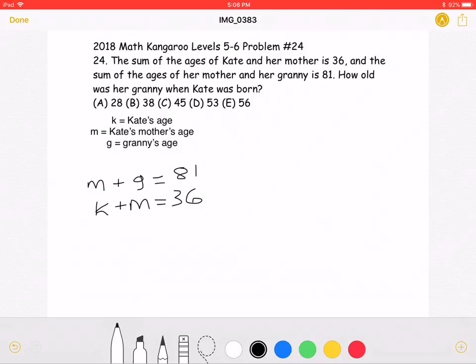Now, we can subtract these two equations and get that the grandmother's age minus Kate's age is going to be equal to 45 because the two M's, or the mother's age, cancels out.